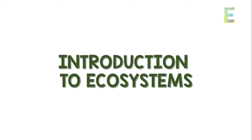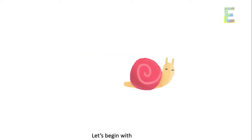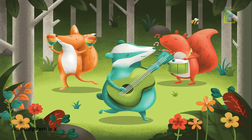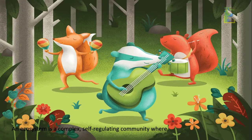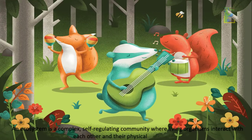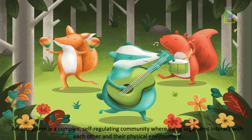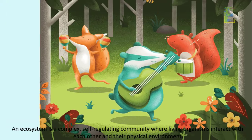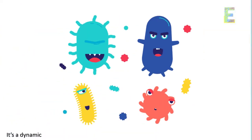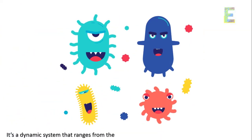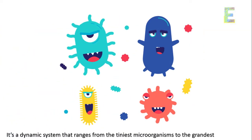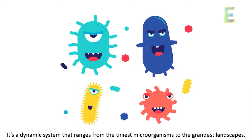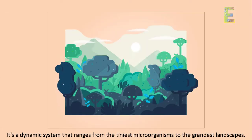Introduction to Ecosystems — let's begin with the basics. An ecosystem is a complex, self-regulating community where living organisms interact with each other and their physical environment. It's a dynamic system that ranges from the tiniest microorganisms to the grandest landscapes.